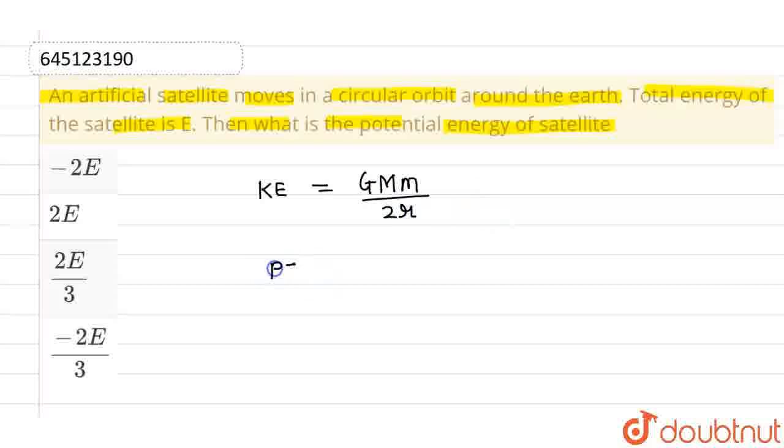Similarly, the expression for potential energy is given by G capital M small m divided by r, but this is with a negative sign.